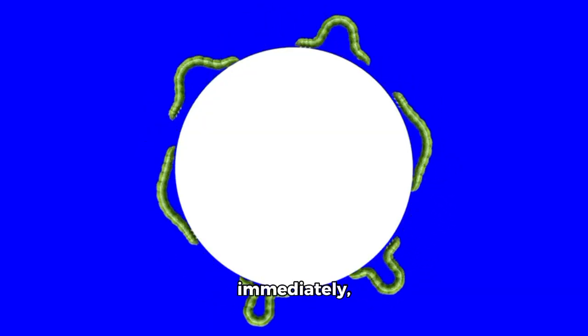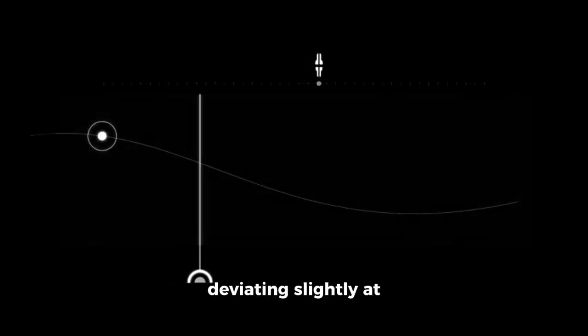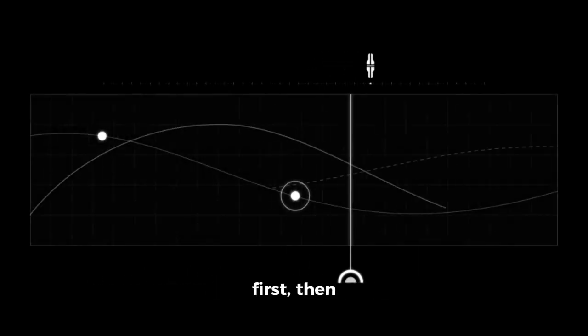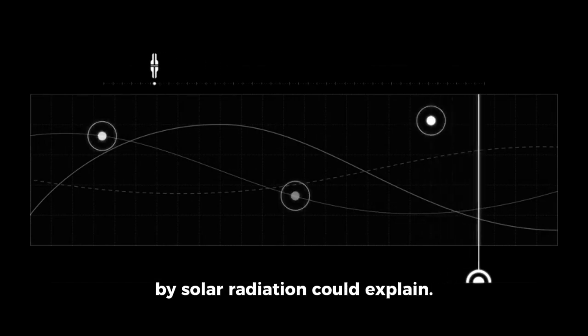However, almost immediately, predictive orbital models failed to keep up. The object's path began deviating slightly at first, then significantly, beyond what the pressure caused by solar radiation could explain.